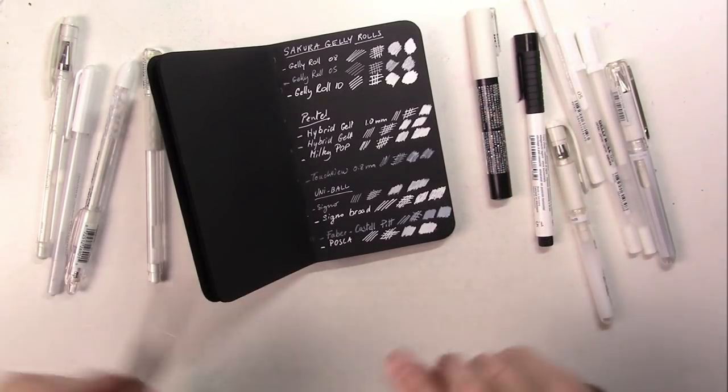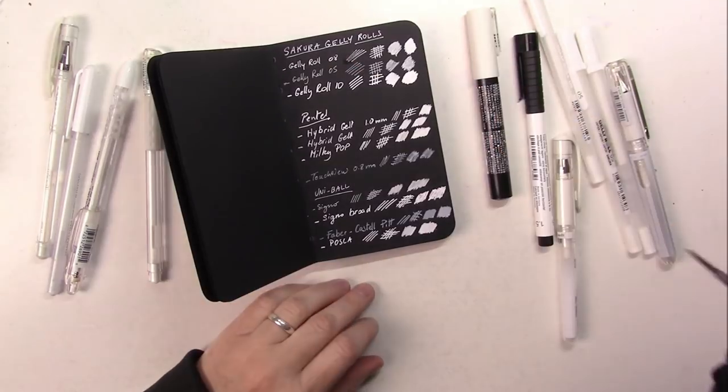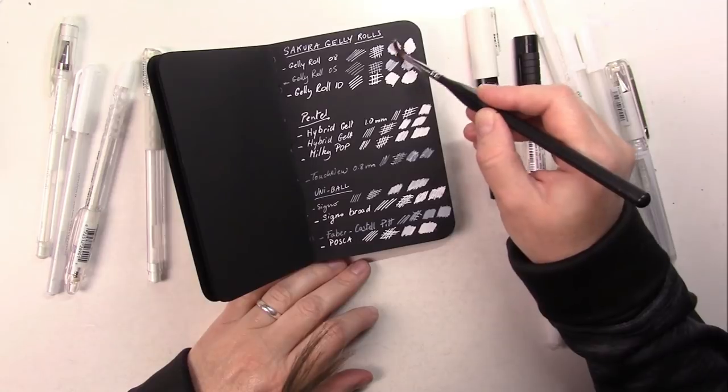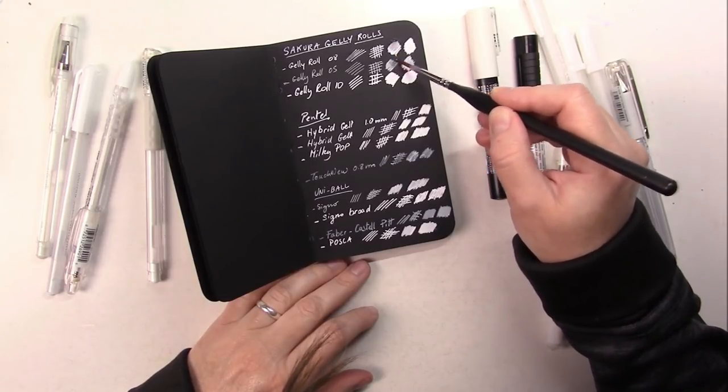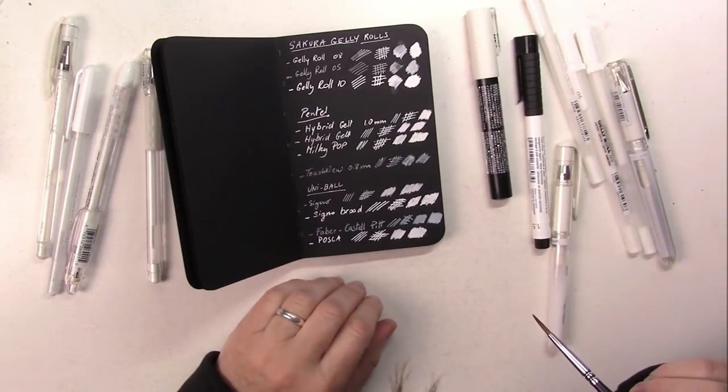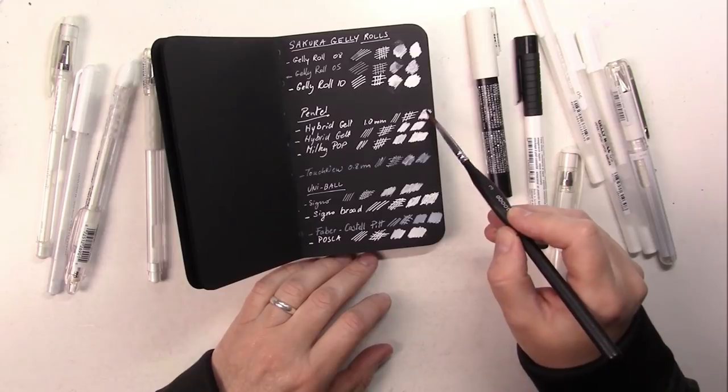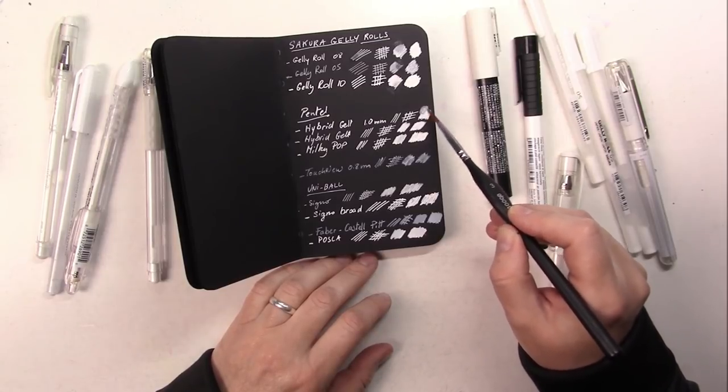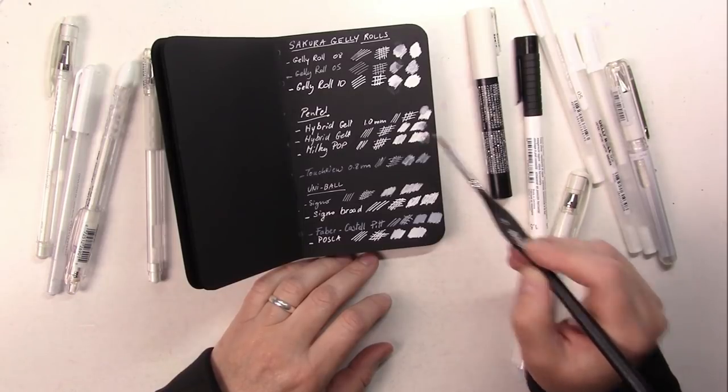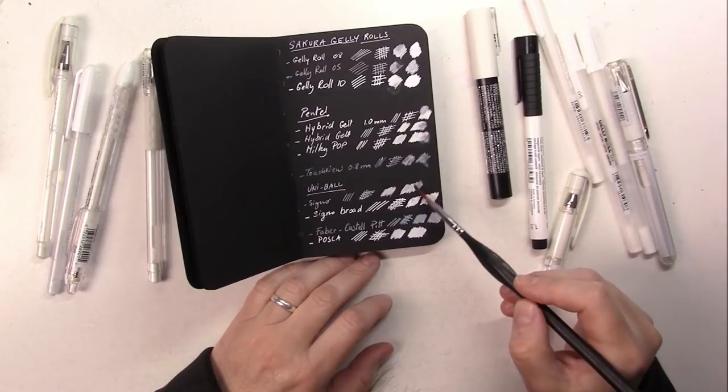Now I want to show you that the other ones here aren't permanent on paper. Although they seem to be gripping to that black paper nicely, you see that I was able to remove some here. Some like the Pentel, it's obvious that you can actually really remove it and it kind of acts like watercolor in a way. It's the same with the Uniball.